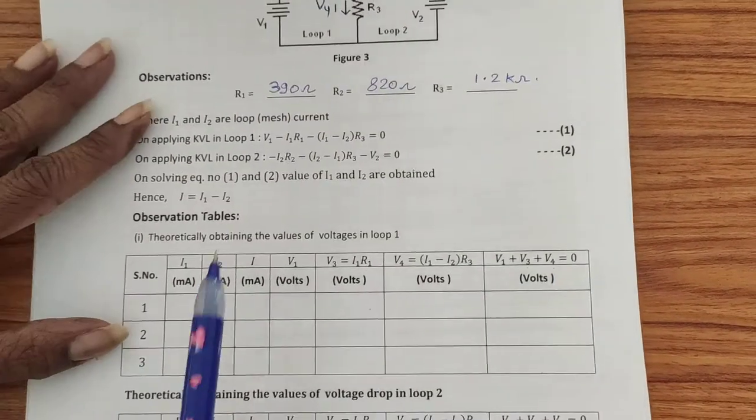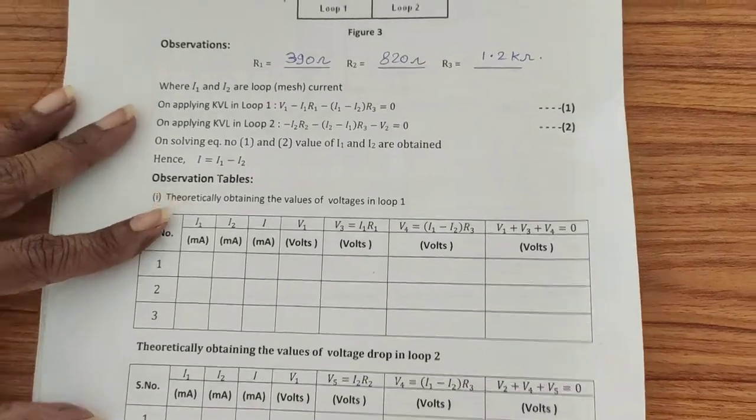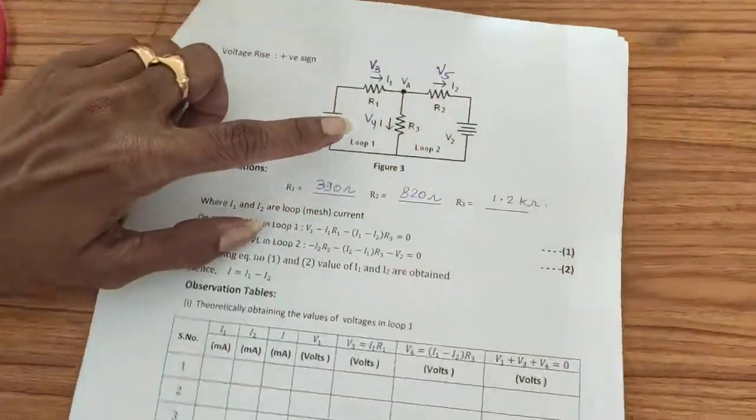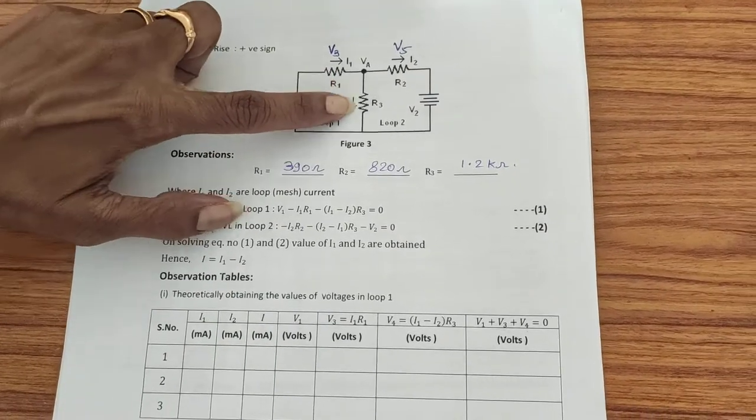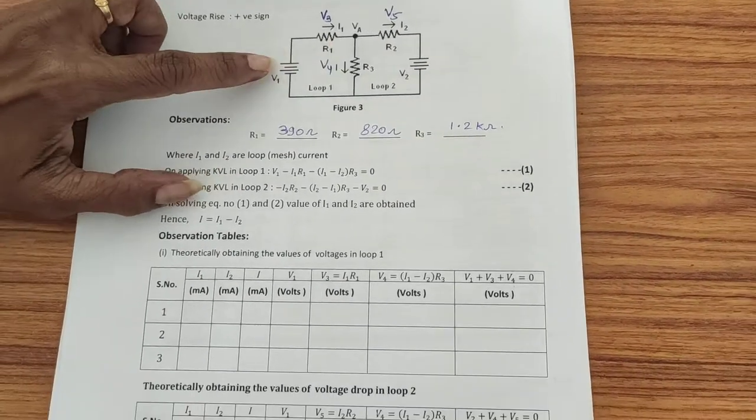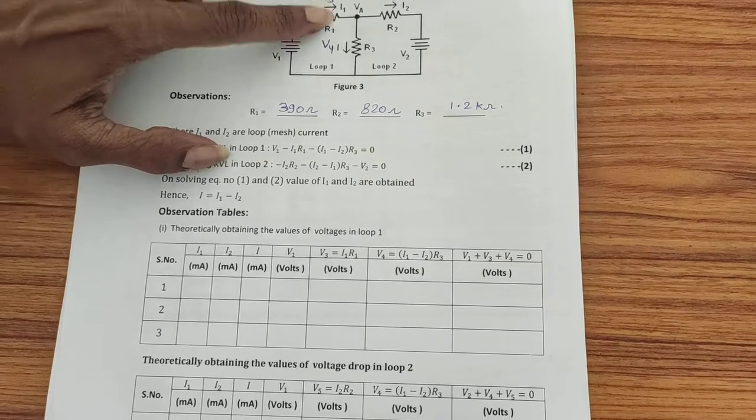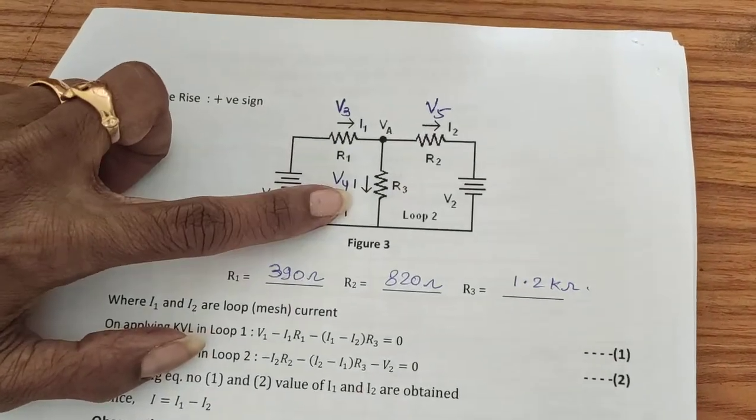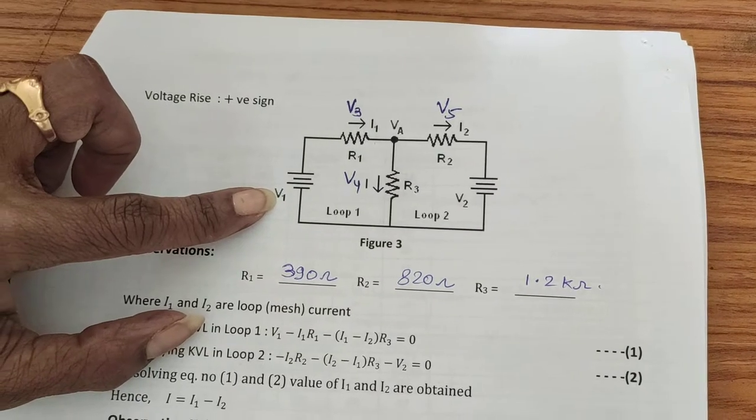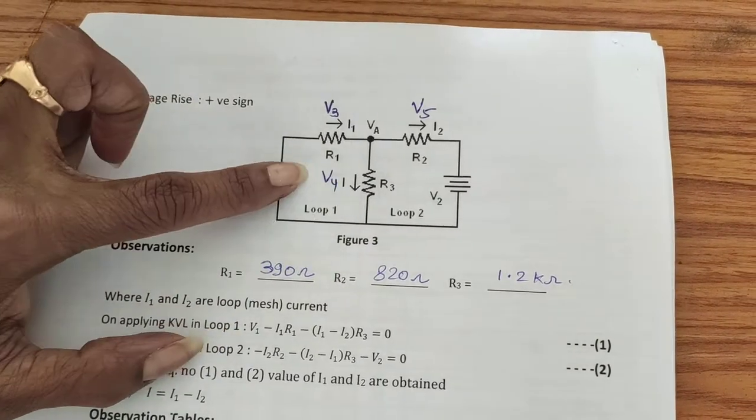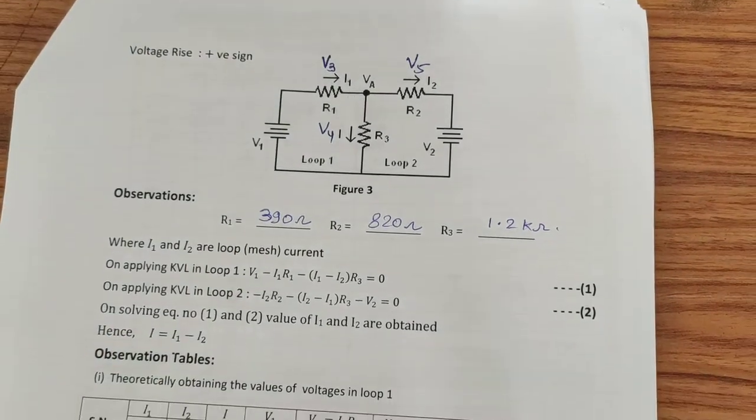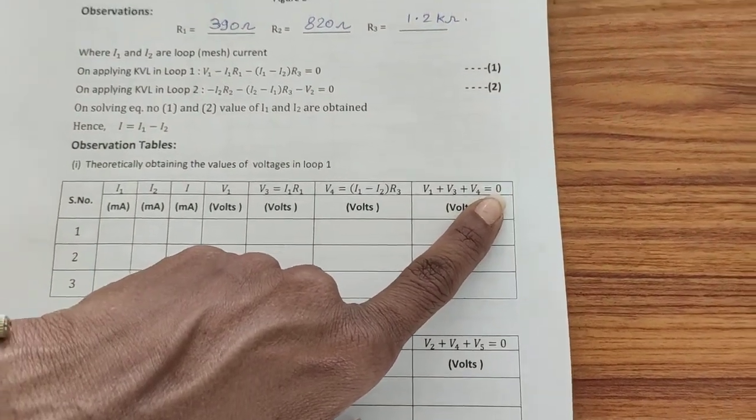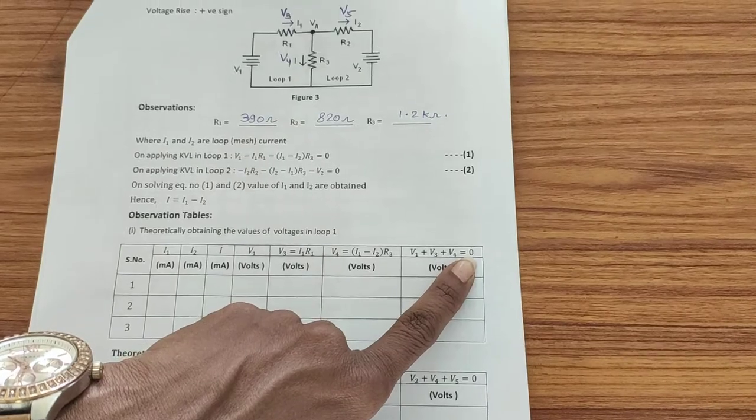If we apply KVL in loop 1, the loop voltages will be V1, V3 and V4 where V3 and V4 are the voltage drops and V1 is the source voltage. Applying KVL here, the equation will be V1 plus V3 plus V4 equals zero. This is the arithmetic sum of voltages in a closed loop.